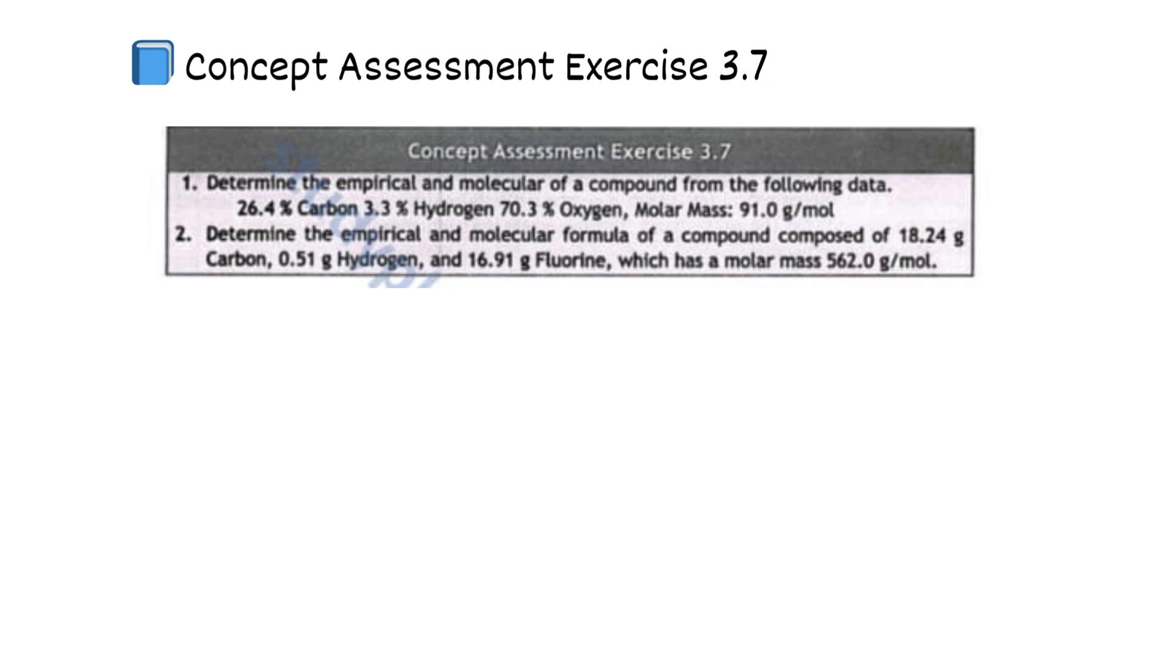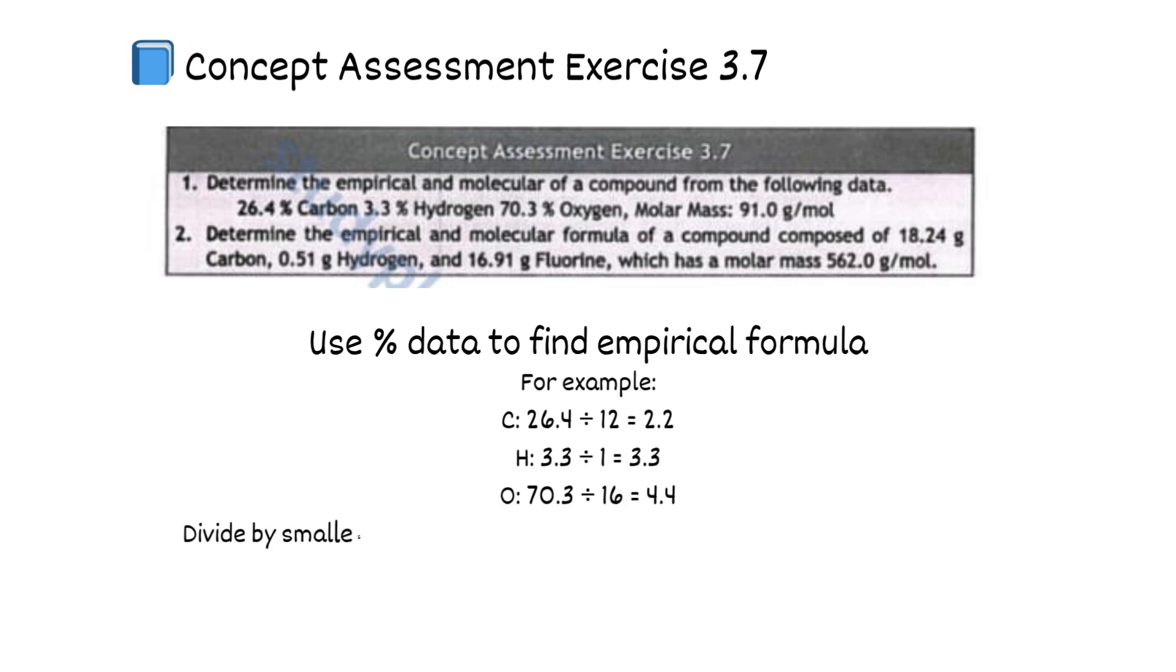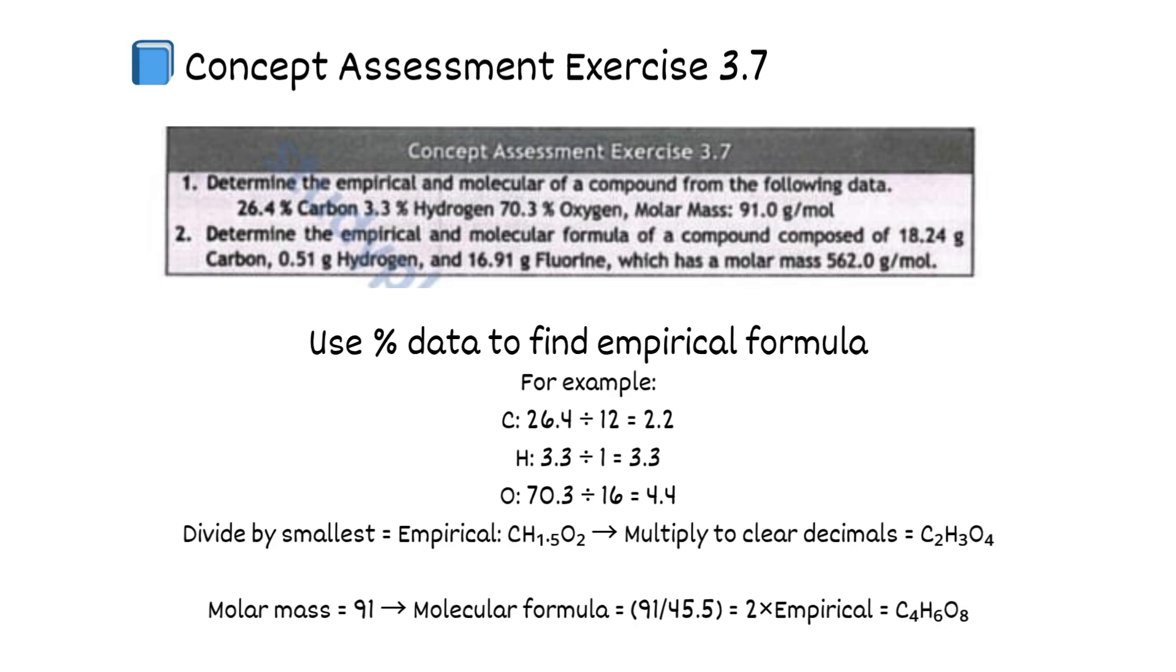Concept assessment exercise 3.7. Use percent data to find empirical formula. For example, C: 26.4 divided by 12 equals 2.2. H: 3.3 divided by 1 equals 3.3. O: 70.3 divided by 16 equals 4.4. Divide by smallest to get empirical: CH1.5O2. Multiply to clear decimals equals C2H3O4. Molar mass equals 91. Molecular formula equals 91 over 45.5 equals 2 times empirical equals C4H6O8.